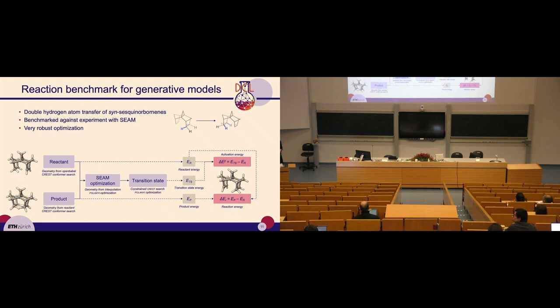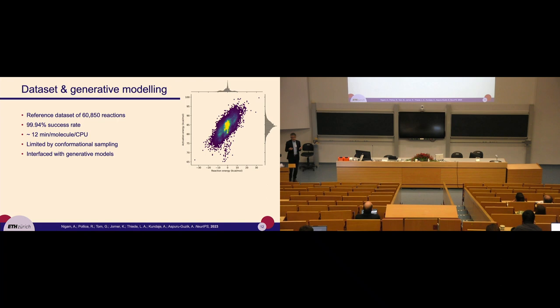For the reaction task we take a double hydrogen atom transfer of syn-sesquinorbornadiene — not because it's very interesting in itself but because it's very good for benchmarking, being very robust, and Frank Jensen in his original work compared SIEM results versus experiments with good agreement. The workflow optimizes structures of reactants, products, and transition states using the SIEM method, then does full conformational sampling to extract activation and reaction energies. We generated a reference data set of over 60,000 reactions with a 99.9% success rate. It takes around 12 minutes per molecule, limited by conformational searches rather than transition state finding.